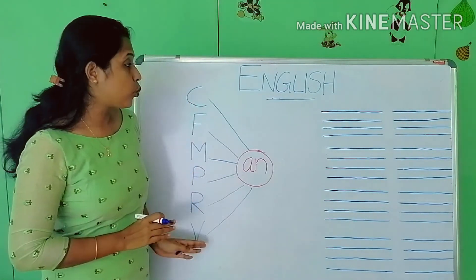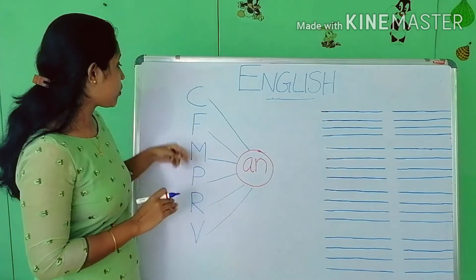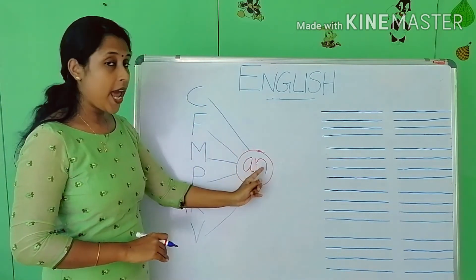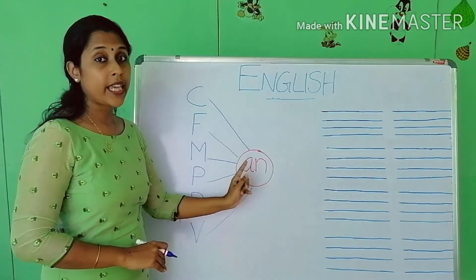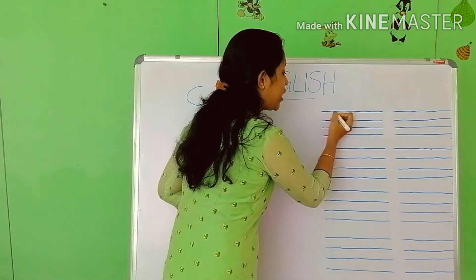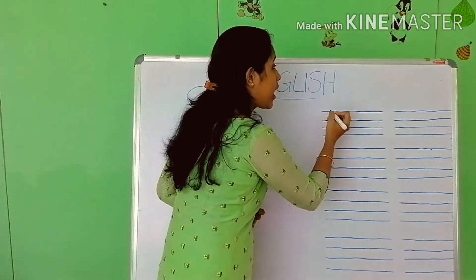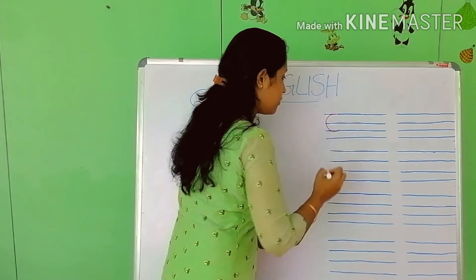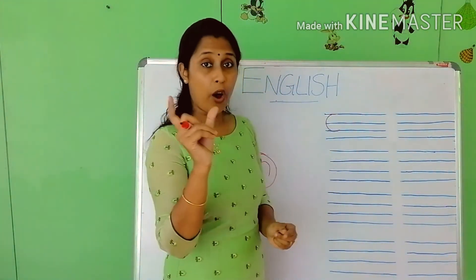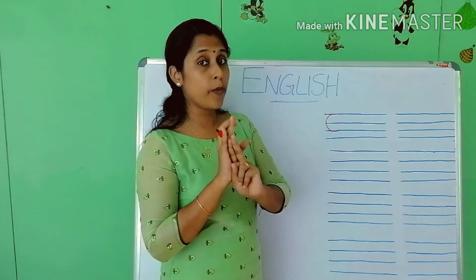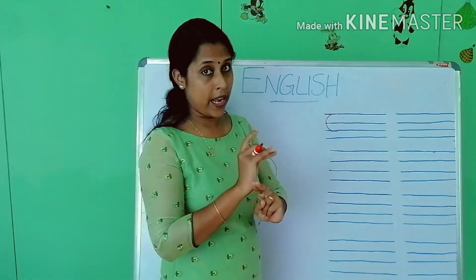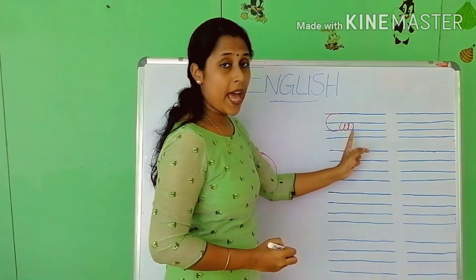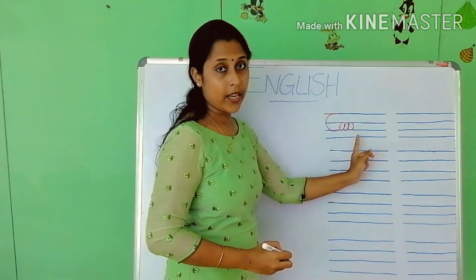Shall we write all these words in the four-line book? Tell me the first word — K, AN — C-A-N — 'can'. Take your four-line and write the word 'can'. When I say the word 'can', which sound do you hear first? K. Write C. For the AN sound, A and N together make the AN sound. C-A-N — 'can'.